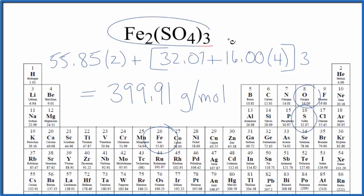That means if we have one mole of this iron(III) sulfate, it's going to weigh 399.91 grams. Note that my periodic table goes out to two decimal places. If yours goes out more or less, you might get a slightly different answer.